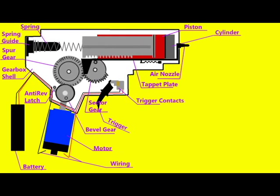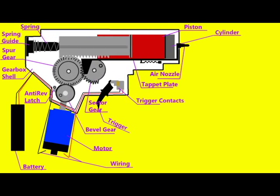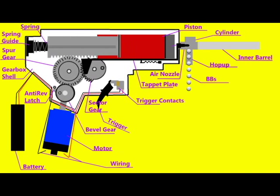The piston is the part that manipulates the air. The tappet plate is responsible for moving the air nozzle, allowing BBs to enter the hop up.